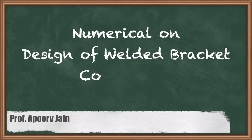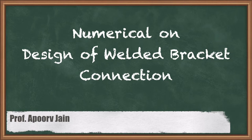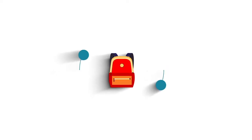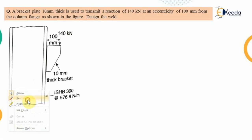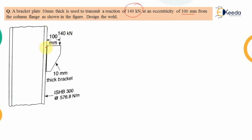Hello everyone. In this video we are going to solve a numerical on the design of the welded bracket connection. The problem says that a bracket plate of 10 mm thickness is used to transmit an end reaction of 140 kN at an eccentricity of 100 mm from the column flange as shown in the figure. Design the weld — that is, the connection to be provided between the column flange and the bracket plate with the help of welding.